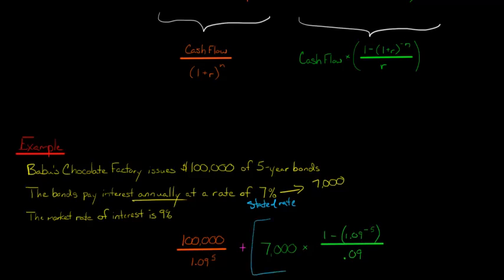Then for the present value of the interest payments, a little more complicated. We take the annual interest payment, which is $7,000. So we take that $7,000. And then here, this equation here, I just plugged in. It's right here. So we've got 1 minus 1.09. Again, I'm using the market rate of interest, not the stated rate, raised to the negative fifth power, because five periods, and then divide it by the market rate of interest, 0.09.